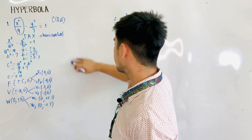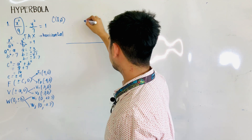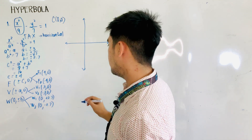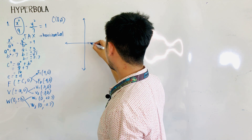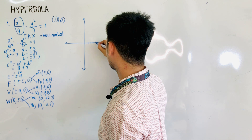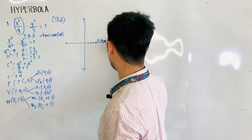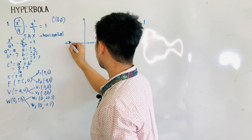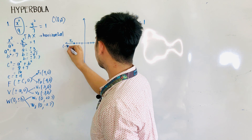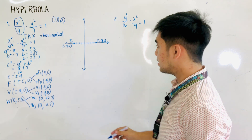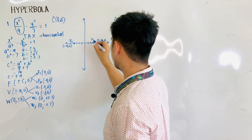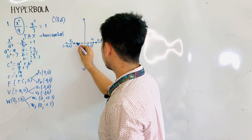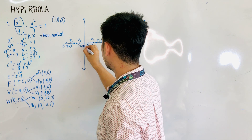Let us now plot the points. F1 is at (4, 0) and F2 is at (-4, 0). V1 is at (3, 0) and V2 is at (-3, 0). The co-vertices W1 and W2 are at (0, 2.7) and (0, -2.7) respectively, located on the y-axis.